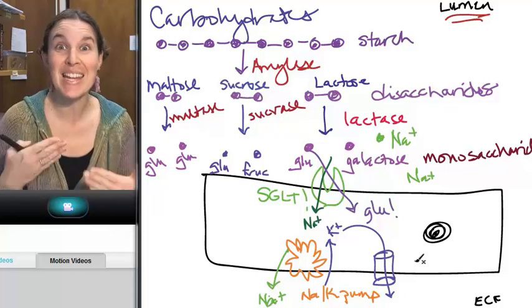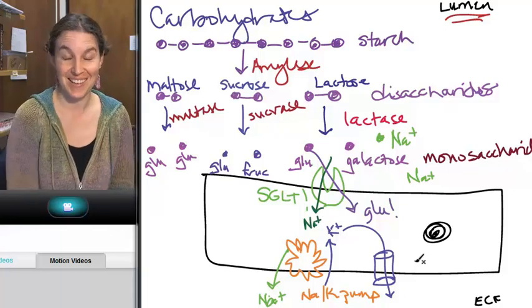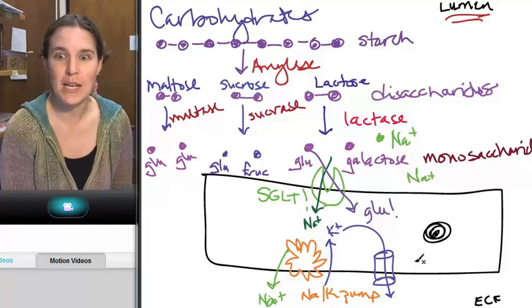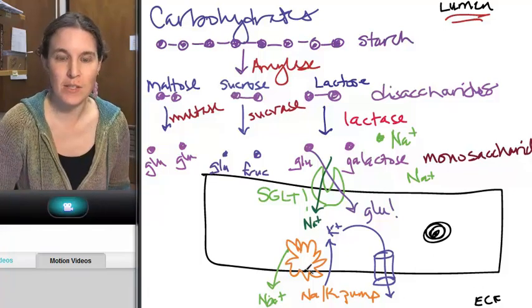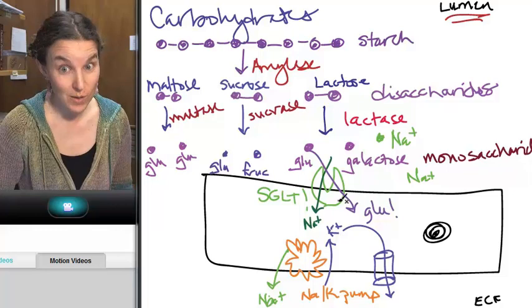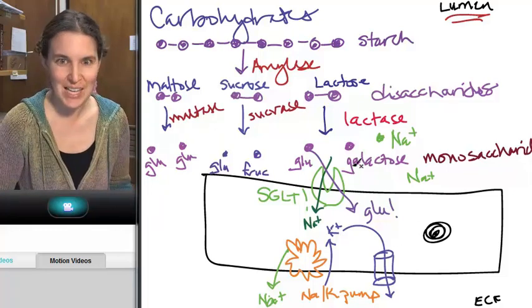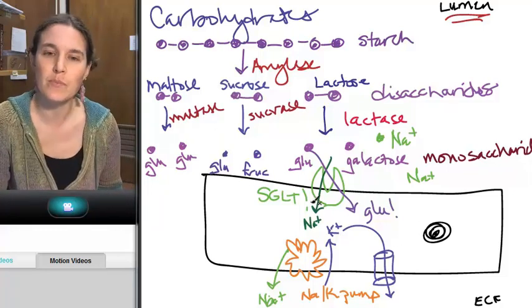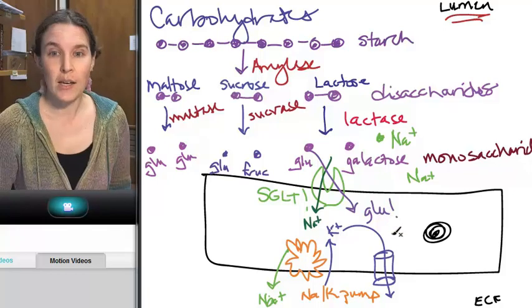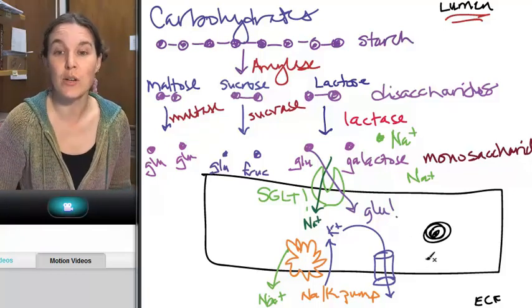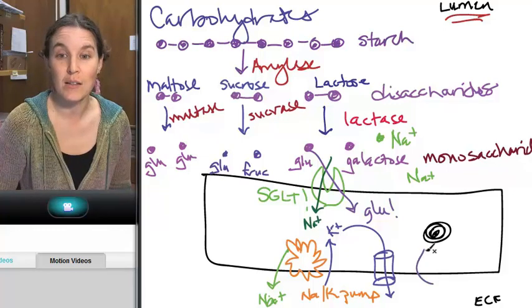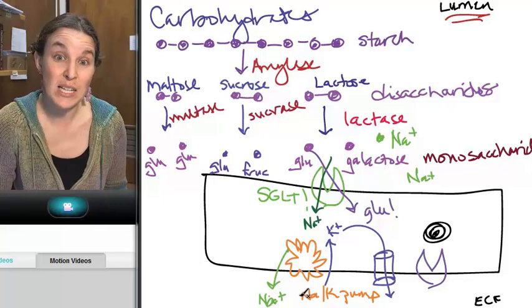You're using the sodium-potassium pump to get rid of the sodium, so SGLT can bring in what? Sodium down its concentration gradient. And who else is coming along for the ride? Glucose. Glucose made it into the cell. Thank you, sodium-potassium pump, because it would not happen if it didn't have the sodium-potassium pump getting rid of the sodium from inside the cell. Can you visualize how they're working together here?